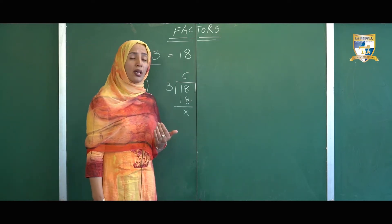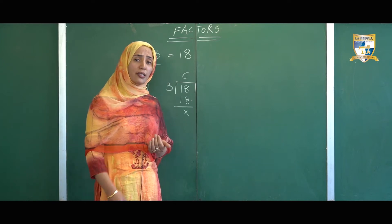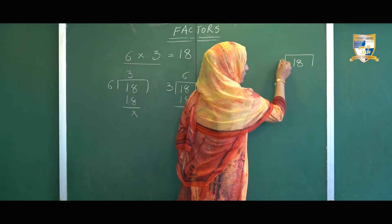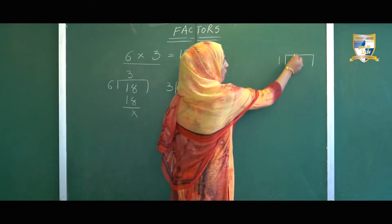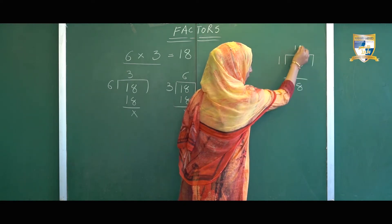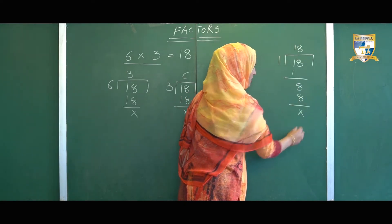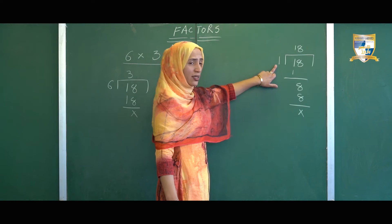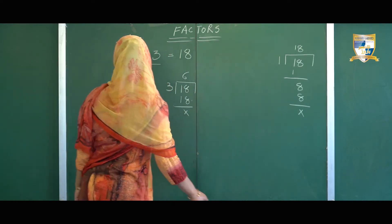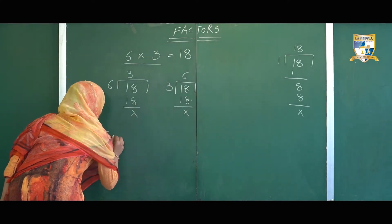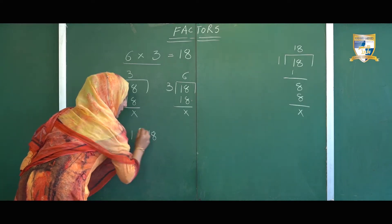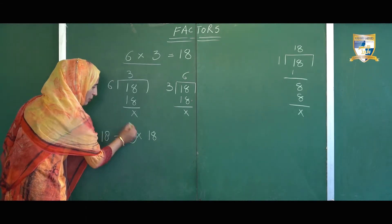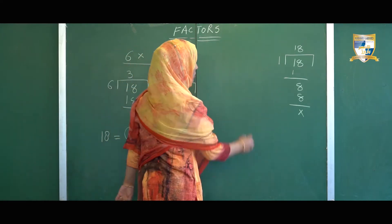Starting with number 1: since 1 is the factor of every number, 1 divides every number evenly. Let's check — we'll divide 18 by 1: one 1s are 1, one 8s are 8. Here you can see 18 is exactly divisible by number 1, leaving remainder as 0. That means 1 is the factor of number 18. So we'll write 18 as a combination of 1 multiplied by 18. This is the first combination. After 1, we'll move on to number 2.